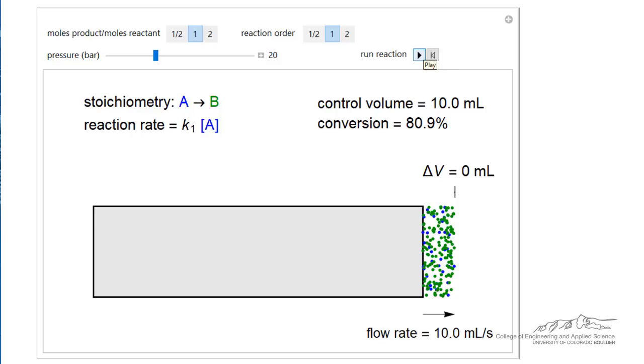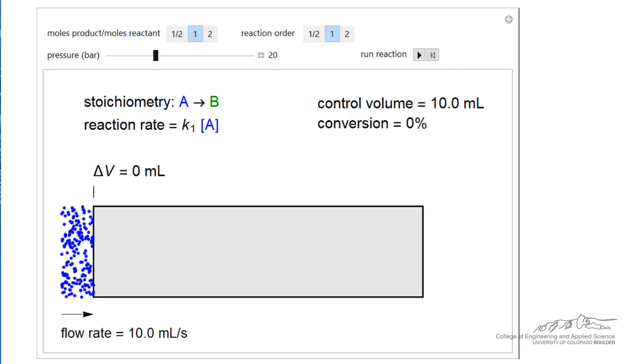We can also change the pressure. And of course changing the pressure means we have lower pressure, fewer molecules. Higher pressure, more molecules. The same conditions for that same 10 milliliters that we're going to follow through the reactor.